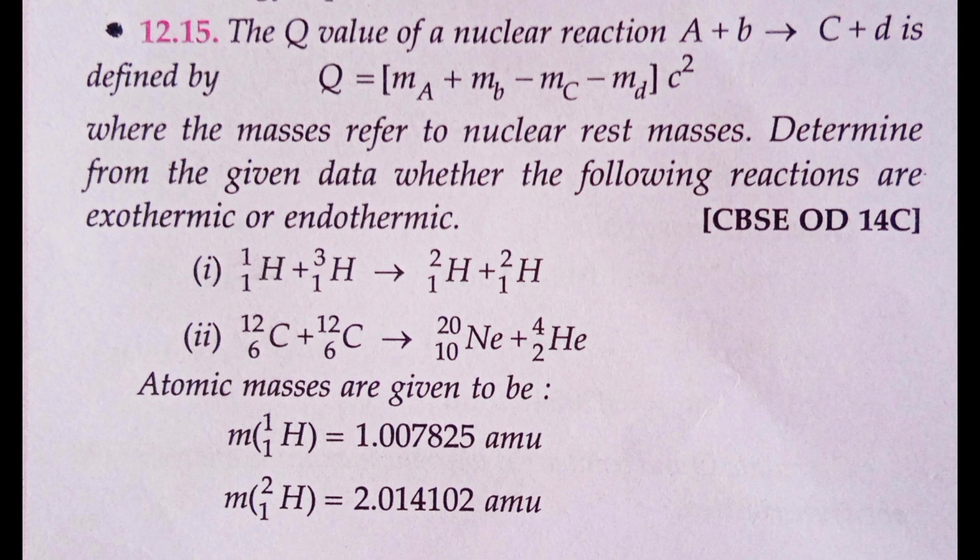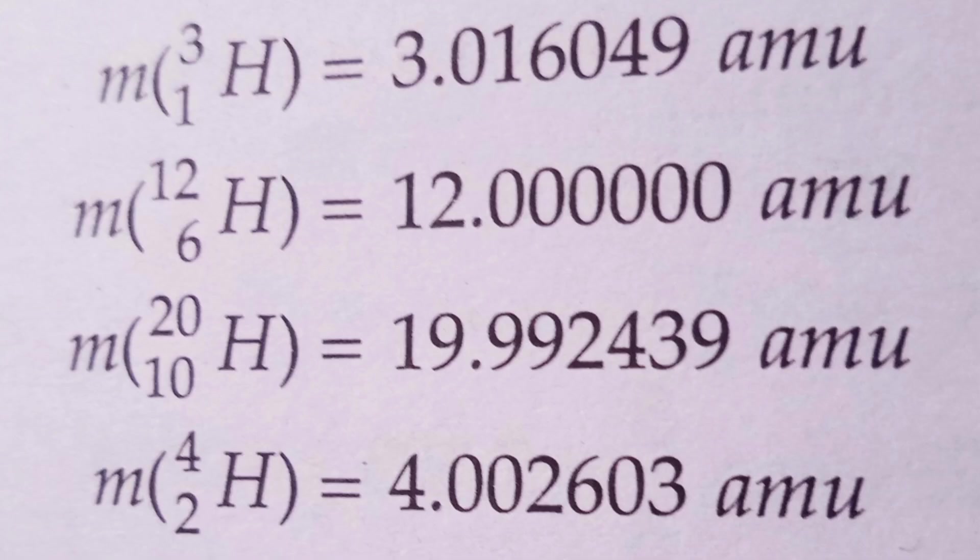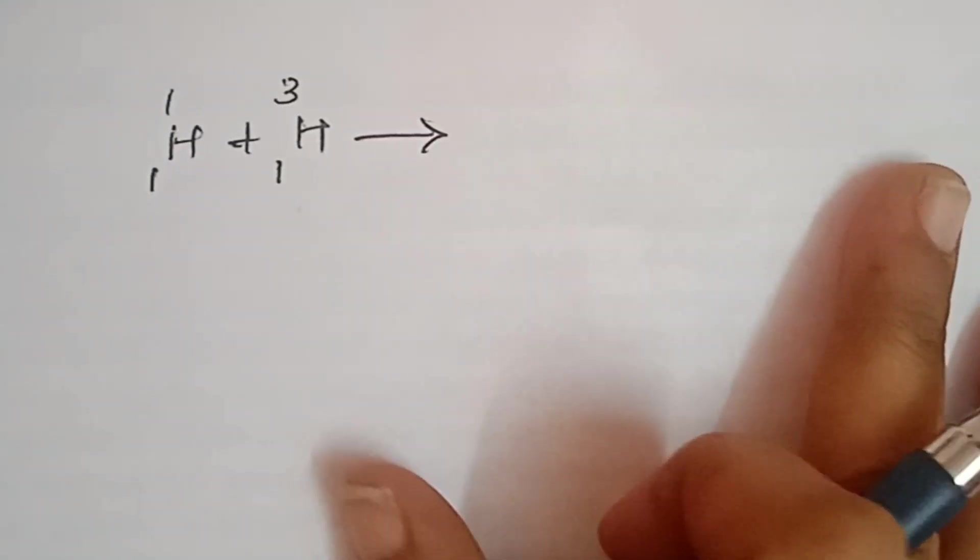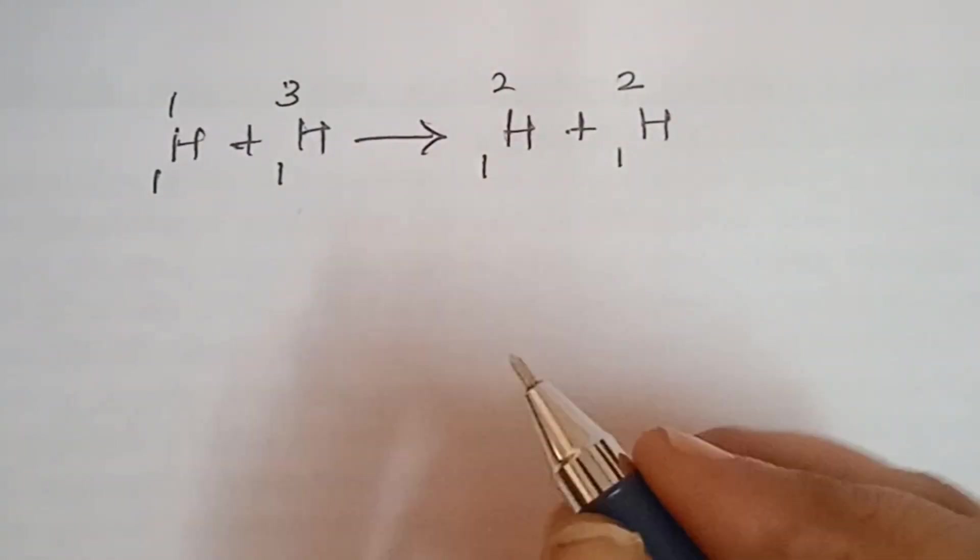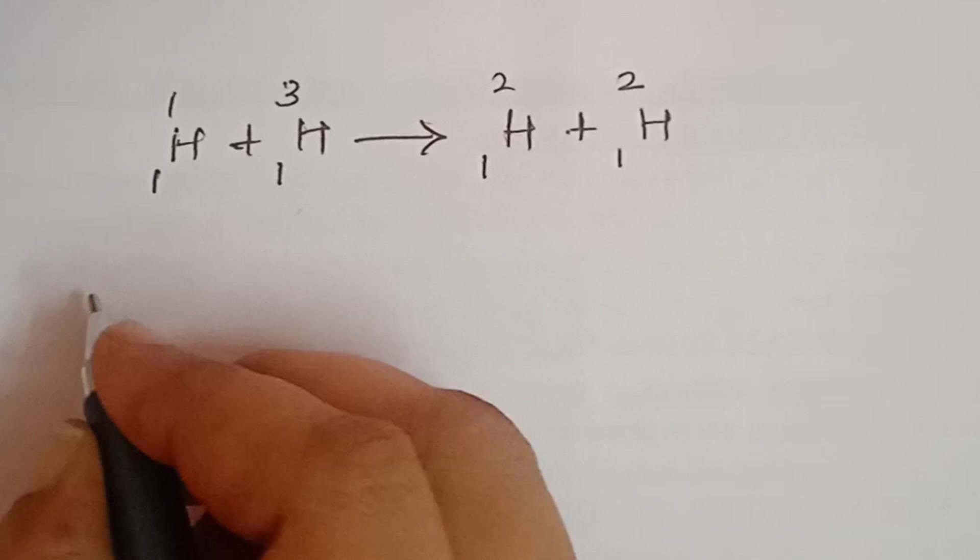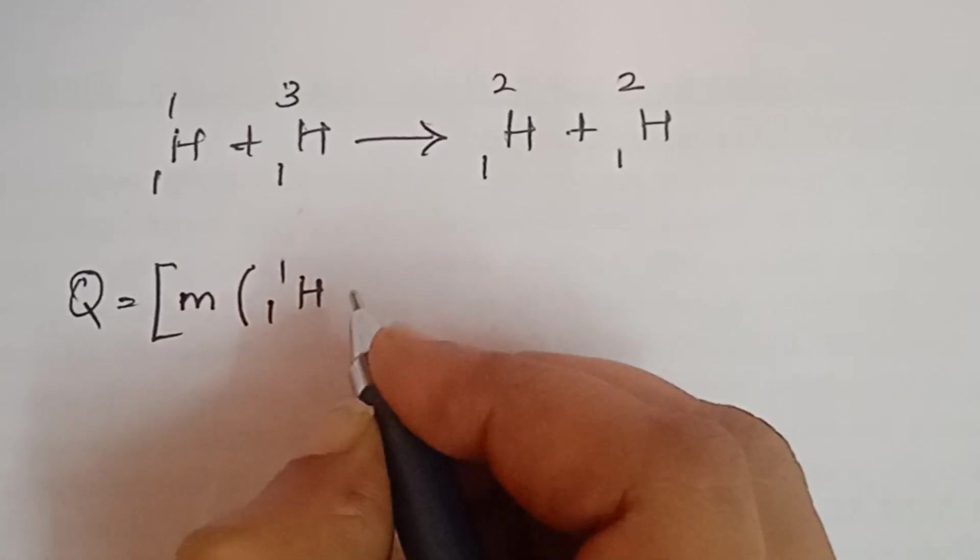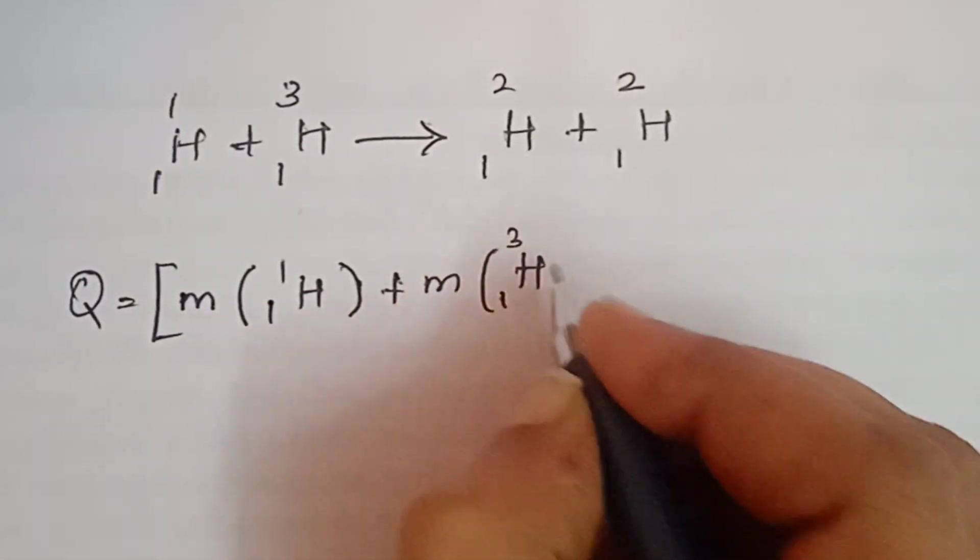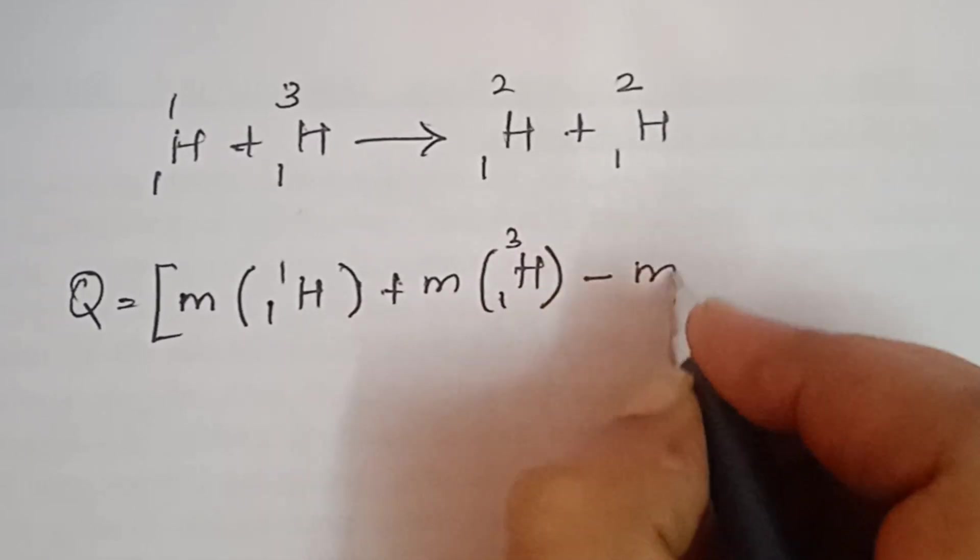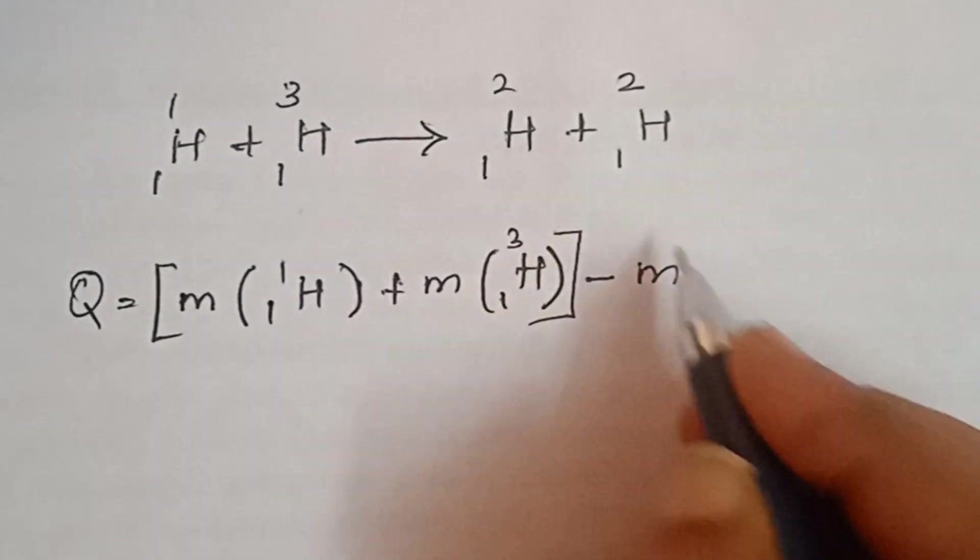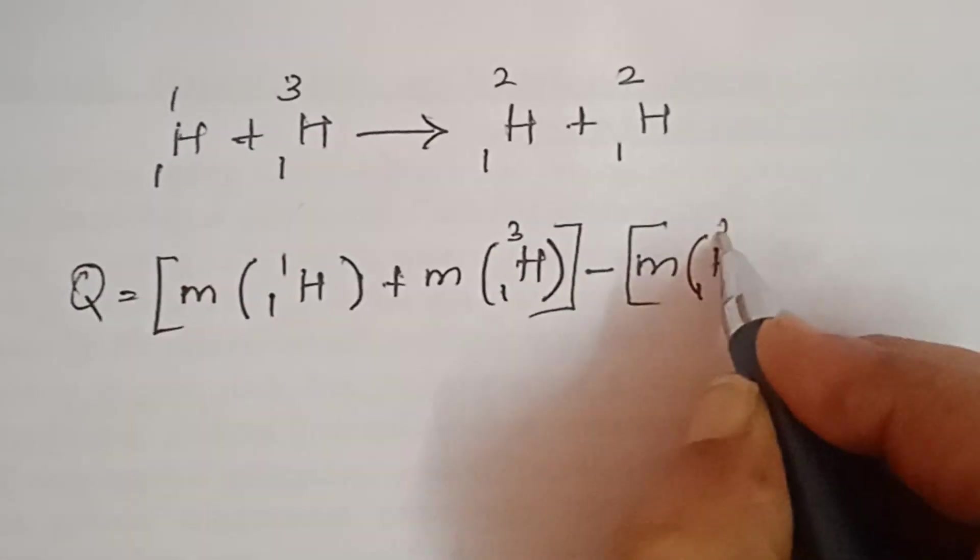For the first equation, delta M c squared - delta M is equal to the left side of the mass minus the right side of the mass. So Q equals delta M c squared. We substitute: the mass of H-1-1 plus H-1-3 minus H-1-2 minus H-1-2, which is 2 times H-1-2, times c squared.